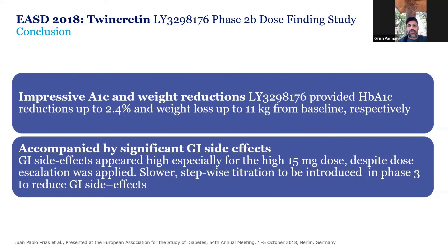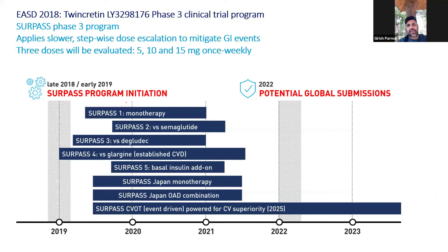There has been an impressive reduction in HbA1c as well as weight with this twincretin or GLP-GIP, which is simultaneous stimulation of GLP-1 and GIP receptors. This molecule is now being actively pursued by Lilly and has a very robust clinical trial program which is ongoing, with very encouraging results. In order to mitigate the gastrointestinal side effects which occur at increasing frequency with simultaneous GLP and GIP stimulation, the common practice has been gradual dose escalation.